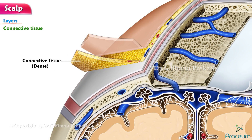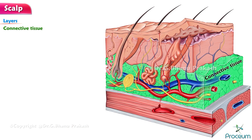Connective tissue, dense — also referred to as superficial fascia. Deep to the skin is dense connective tissue: dense fibrous connective tissue that firmly binds the skin to the underlying occipitofrontalis and its aponeurosis. Fibroseptal divide this layer into numerous small pockets containing lobules of fat. The blood vessels and nerves of the scalp lie in this layer.